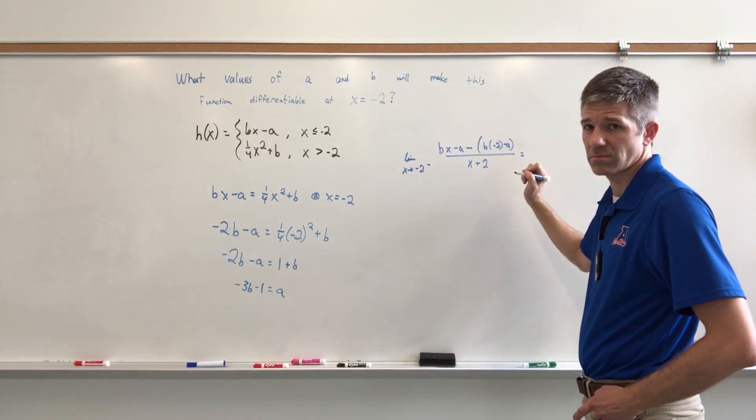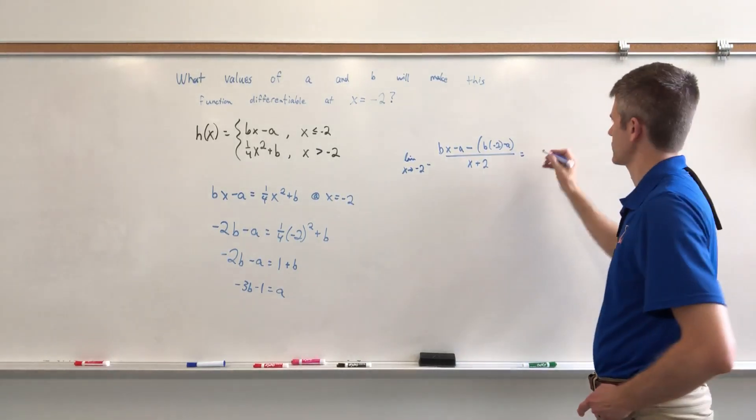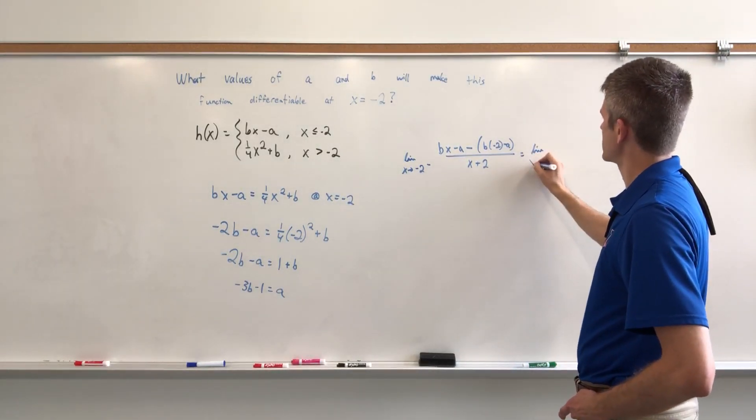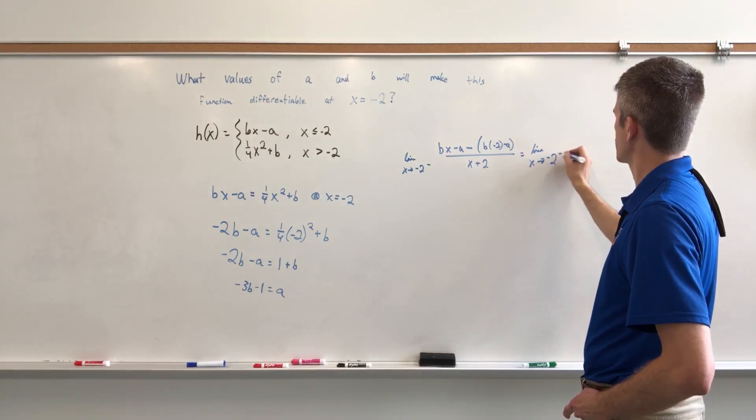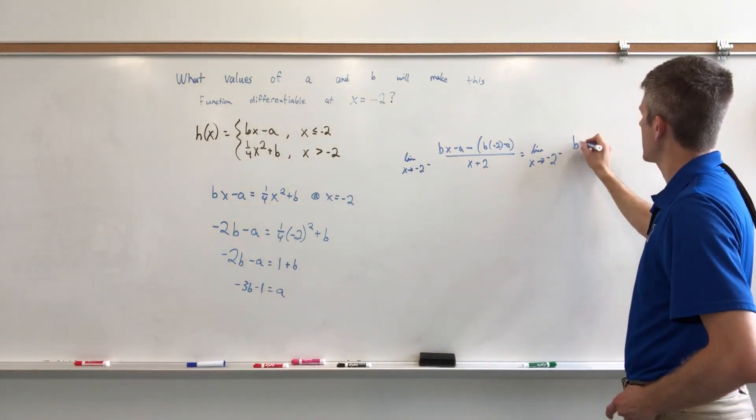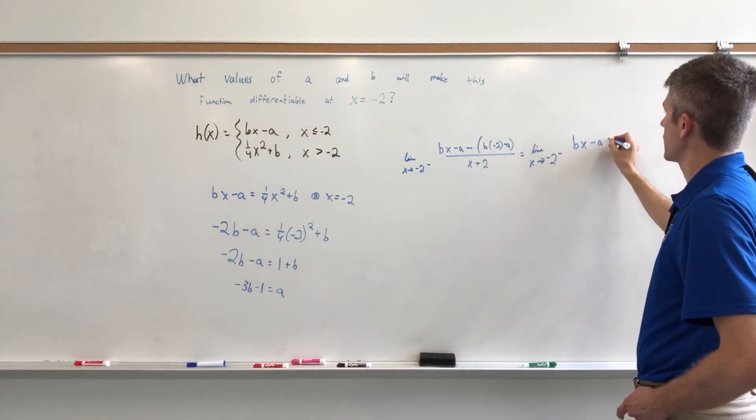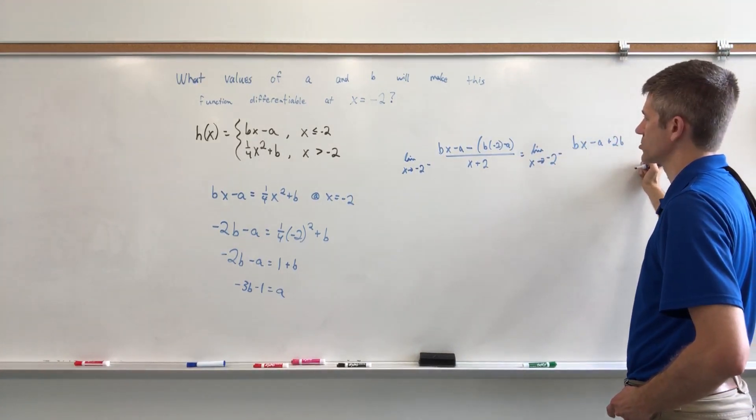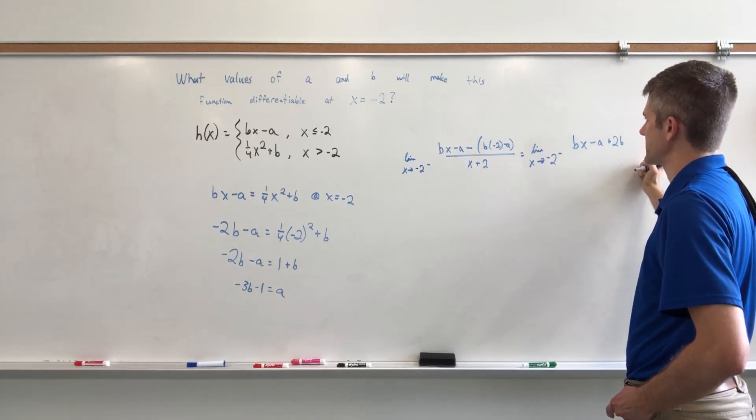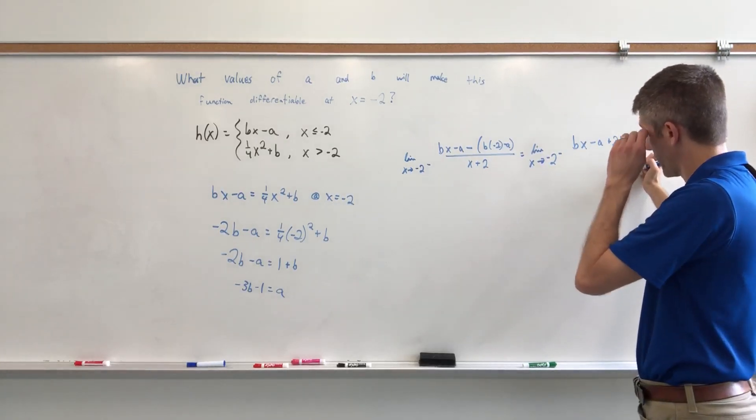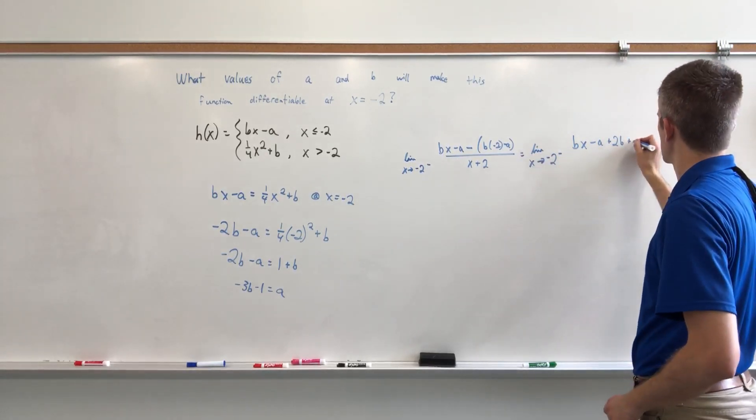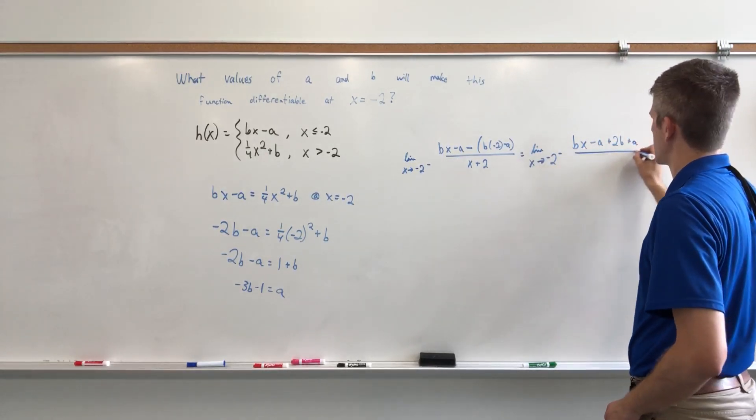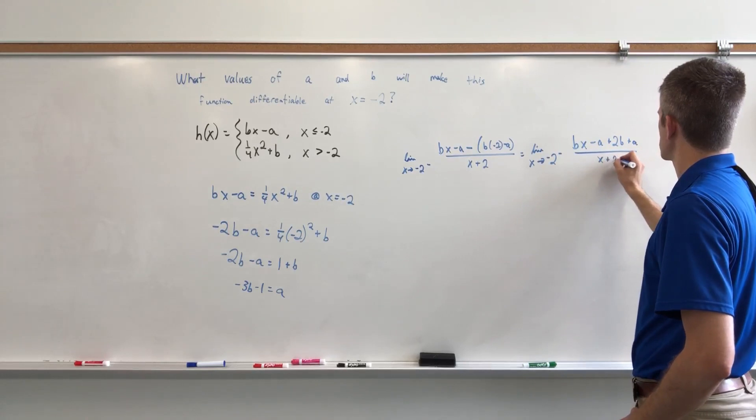Do you want to see it? Let's go fast. Skip this part if you want to. The limit as X approaches negative 2 from the left of BX minus A plus 2B. Something's wrong. Something is wrong. Nope, it's not. And then plus A.